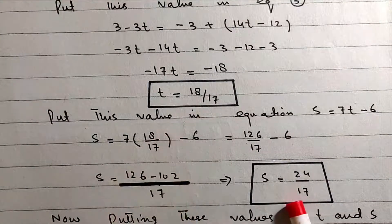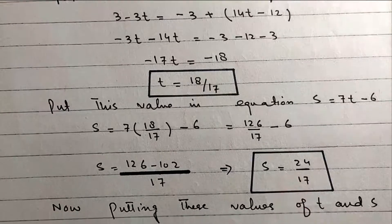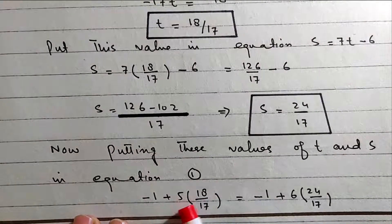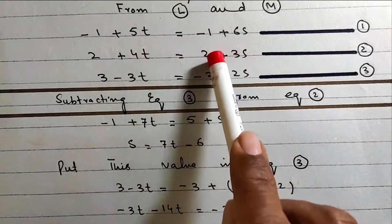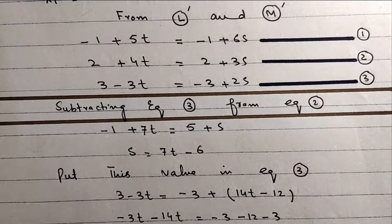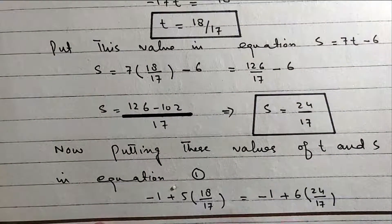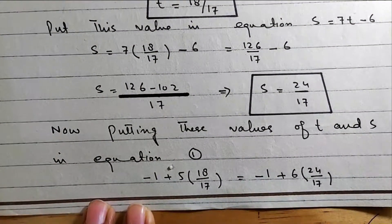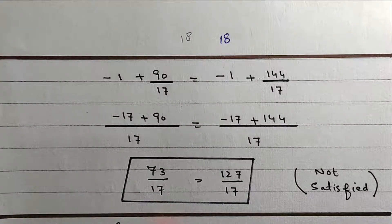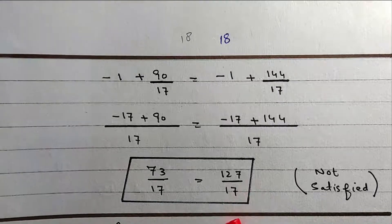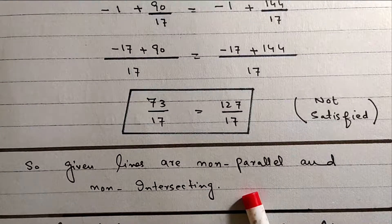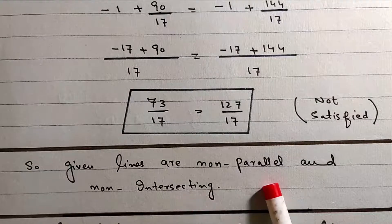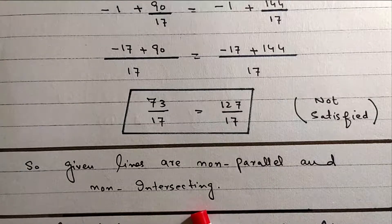After solving, putting the values of t and s back and checking, we get 73/17, which does not satisfy the equations. So the given lines are non-parallel and non-intersecting (skew lines).